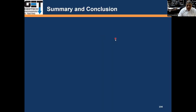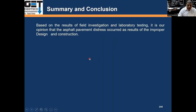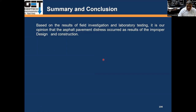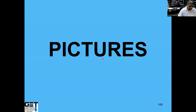Summary and conclusion: based on the results of the investigation and laboratory testing, it is our opinion that the asphalt pavement distress occurred as a result of improper design and construction. The percentages of fault were assigned accordingly. One should be able to go through this kind of process, get all the data together, and come up with percentages.